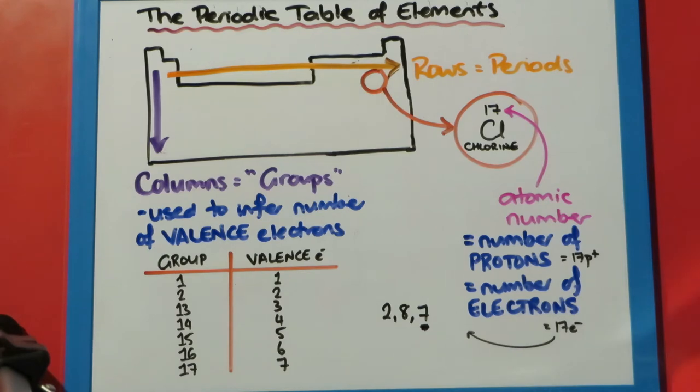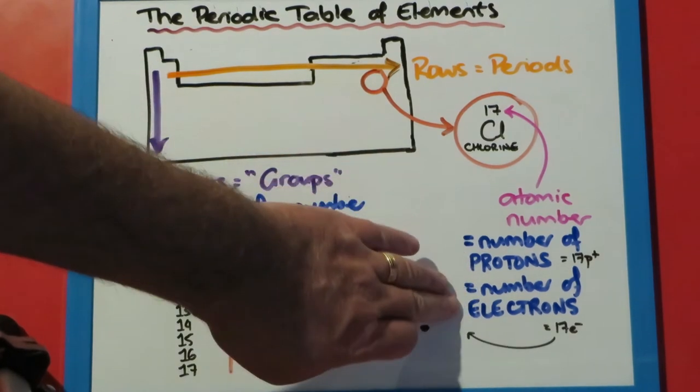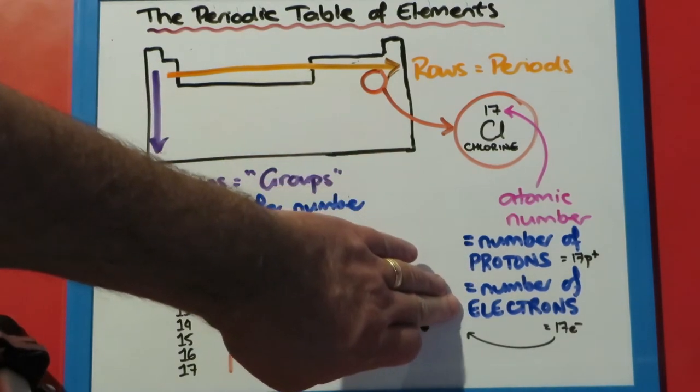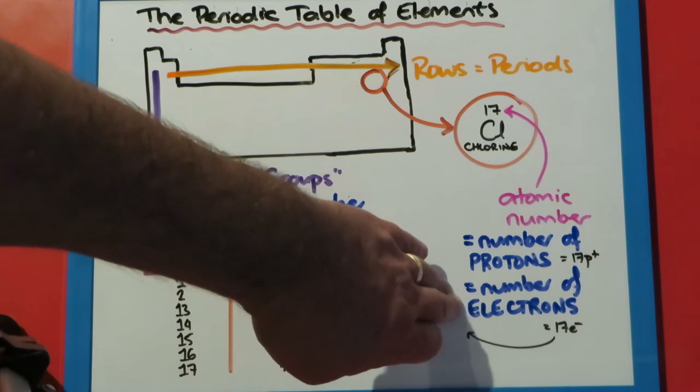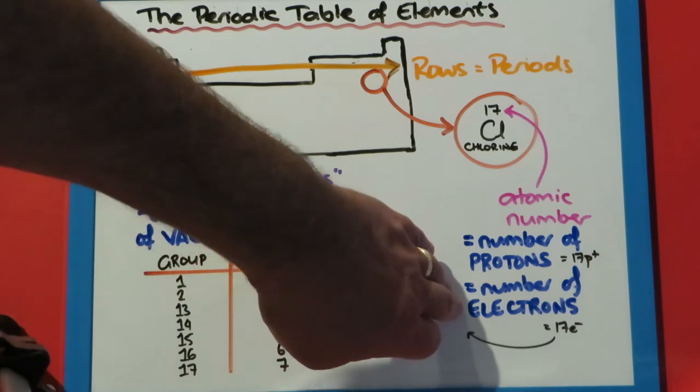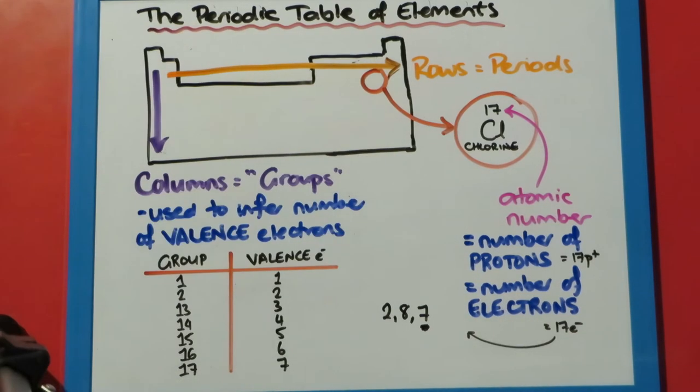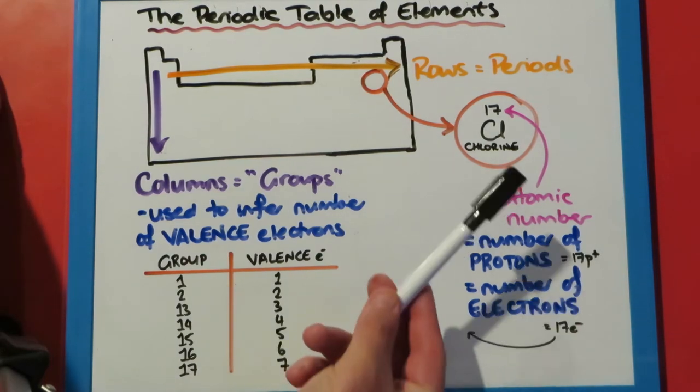The atomic number is equivalent to the number of protons in the nucleus, so the number of positive charges. But because atoms are neutral, that also equals the number of electrons, so the number of negative charges orbiting or moving around the outside of the nucleus. And they are arranged in shells or energy levels.